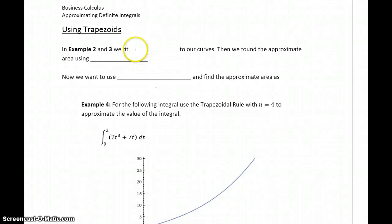In examples 2 and 3, we took each of our curves and forced rectangles into those, or forced our curve to fit to some rectangular shapes. Then we used the formula area equals length times width to come up with that approximate area.